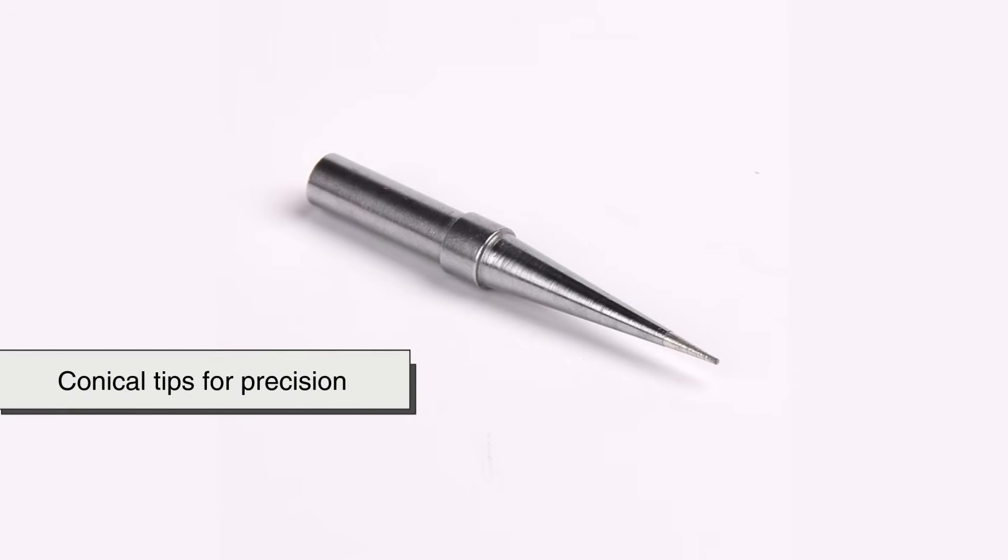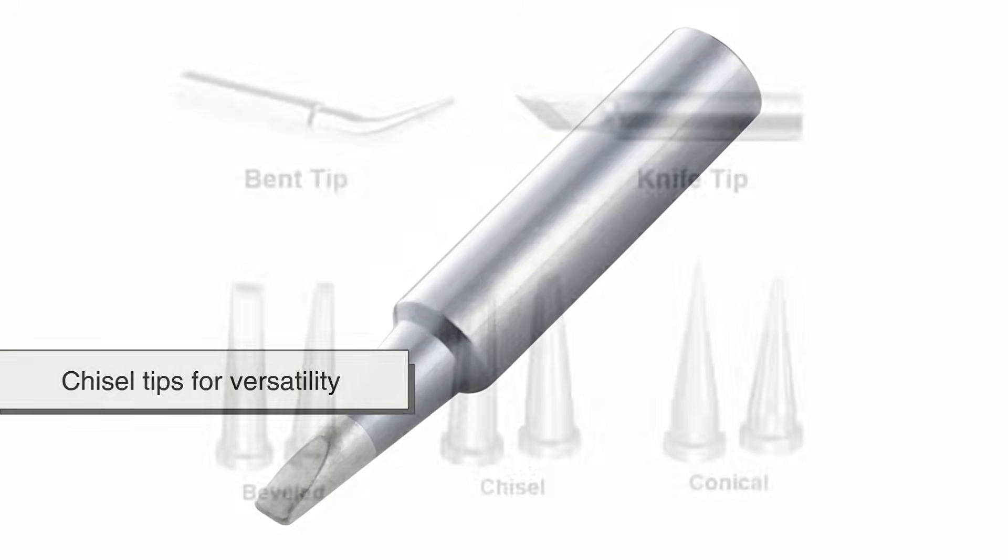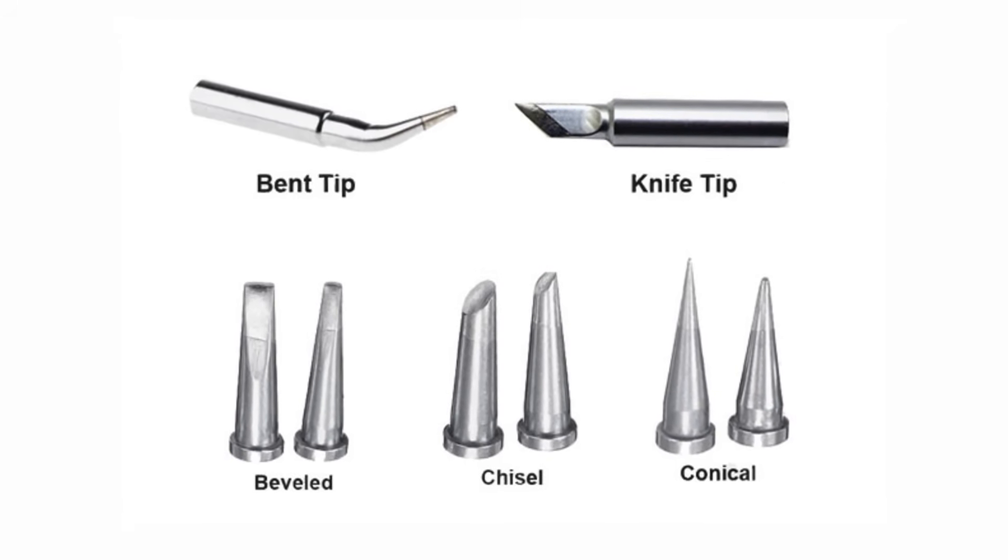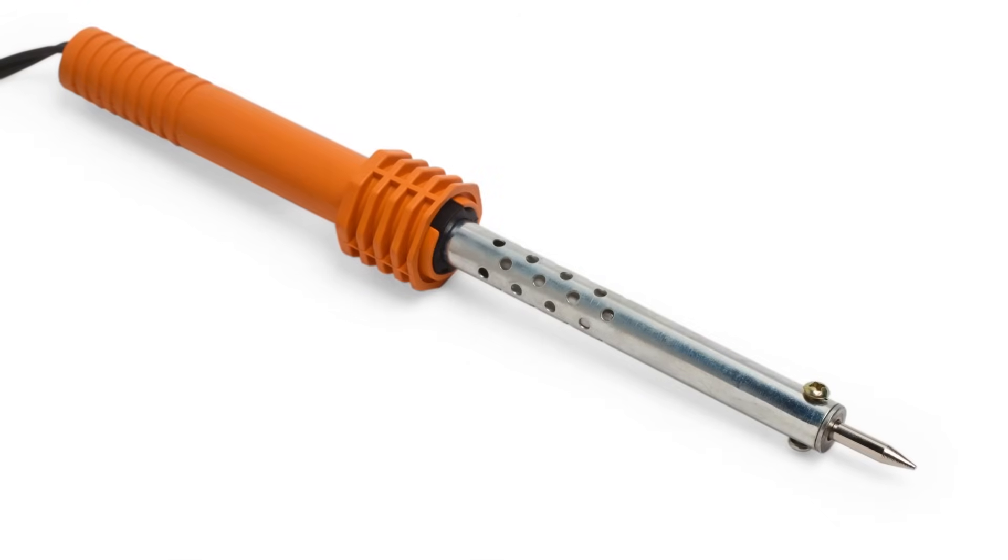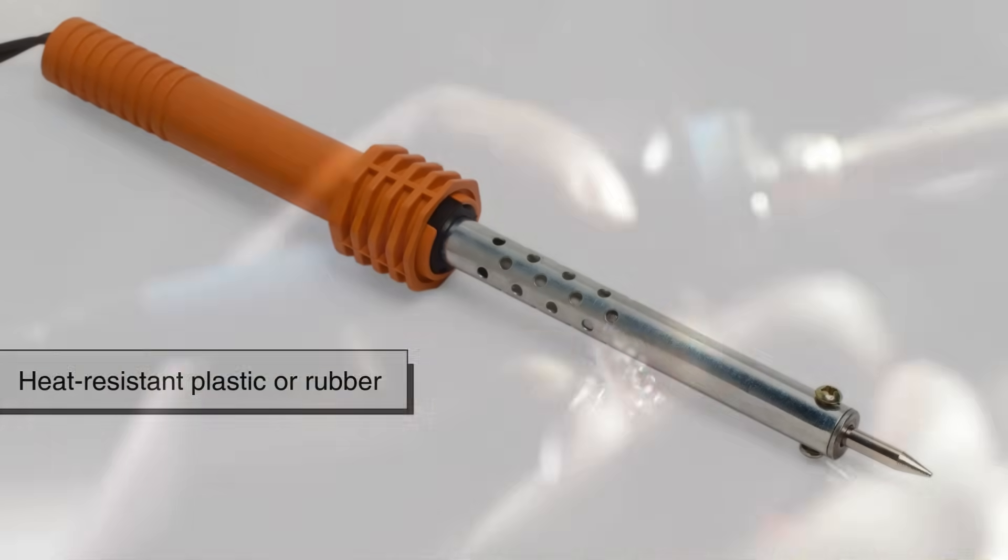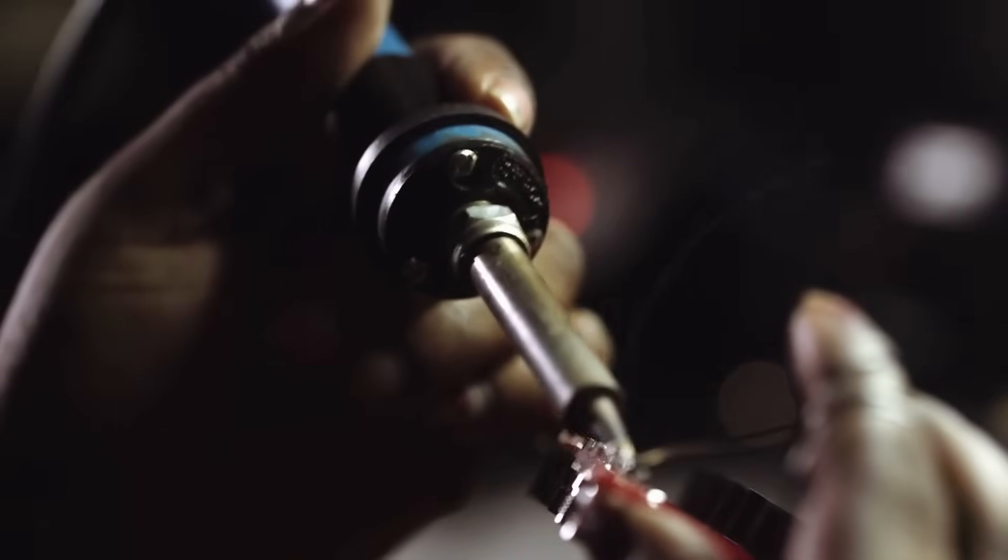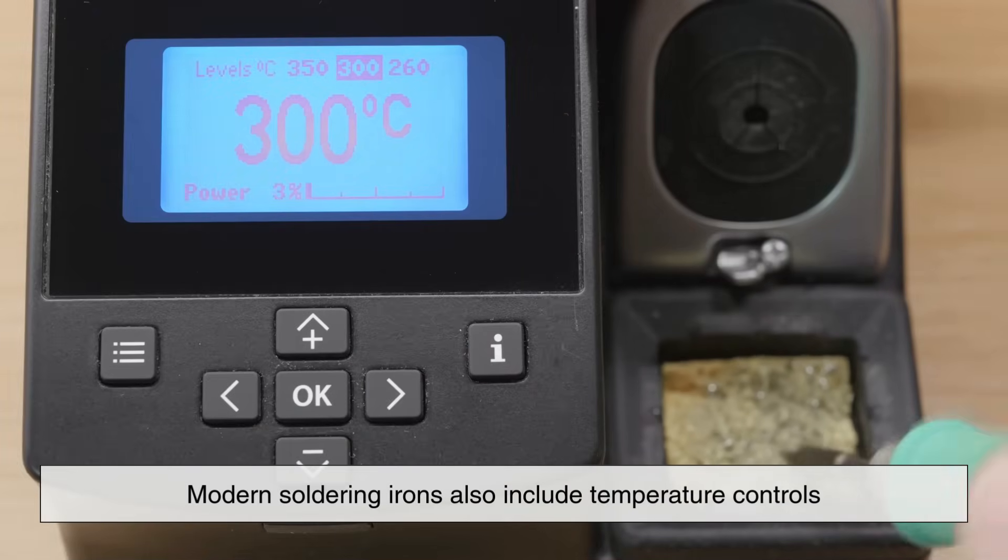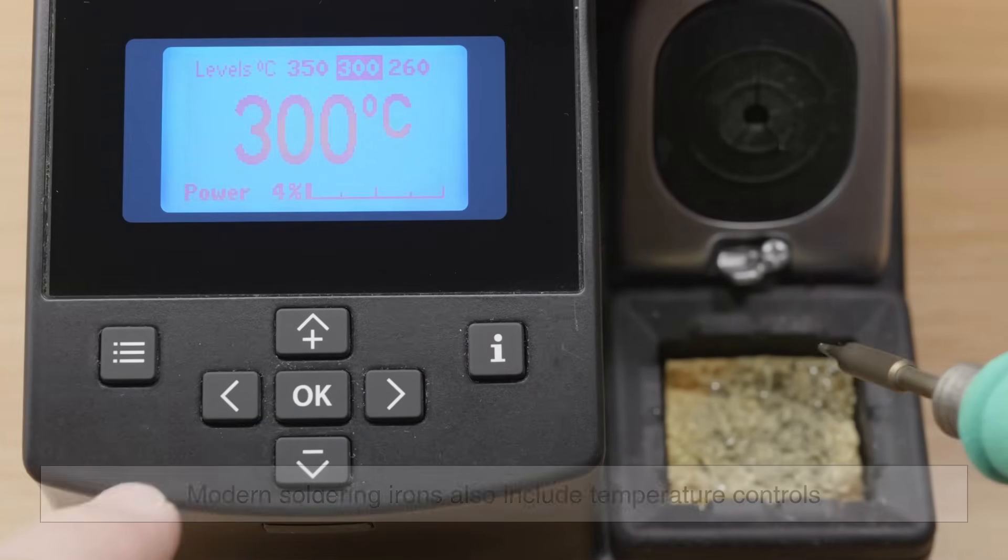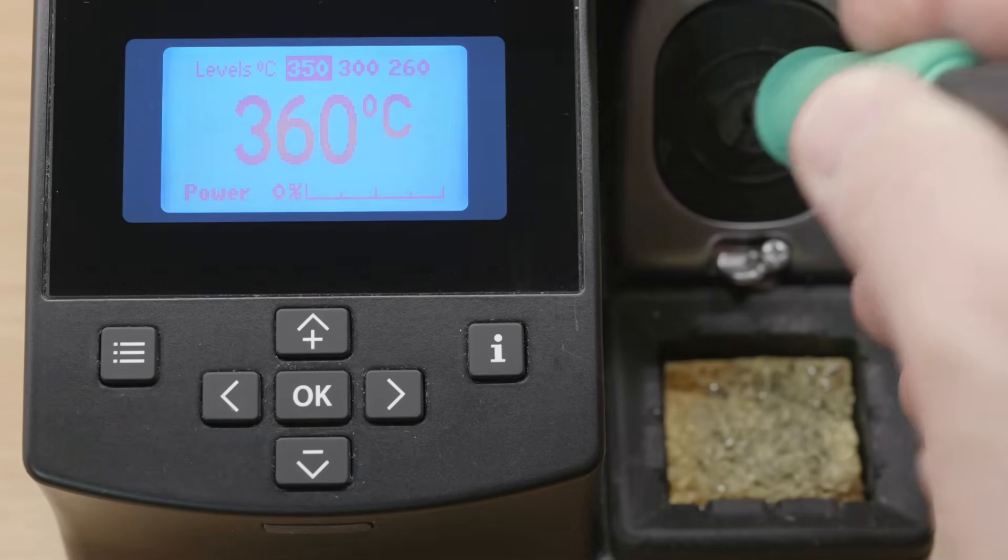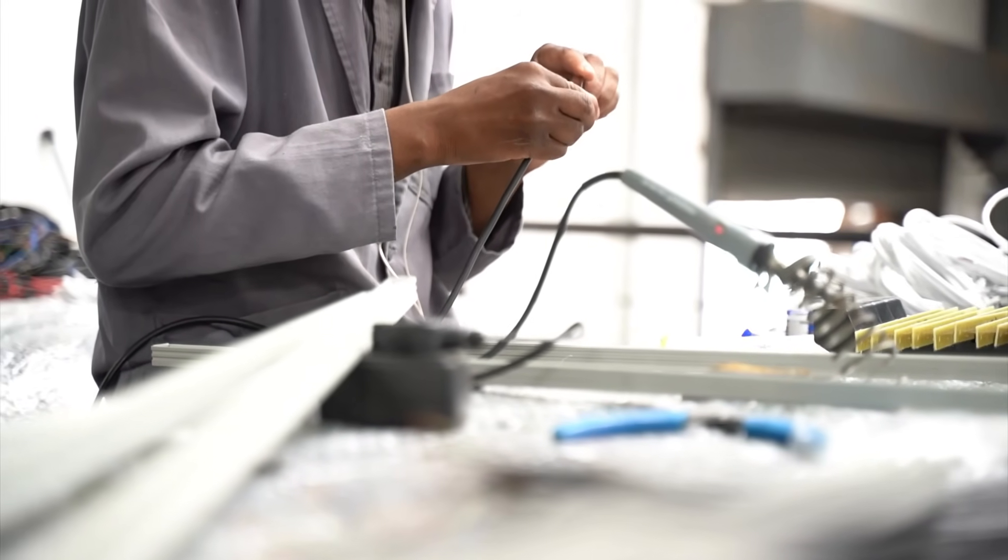Conical tips for precision, chisel tips for versatility, and even specialized tips for desoldering or working on surface mount components. The handle, often made from heat-resistant plastic or rubber, insulates your hand from the hot parts and gives you control. Modern soldering irons also include temperature controls, either analog knobs or digital interfaces, allowing you to set the exact heat you need.